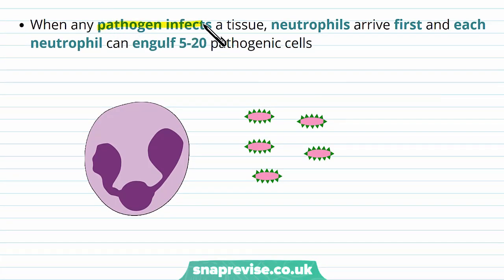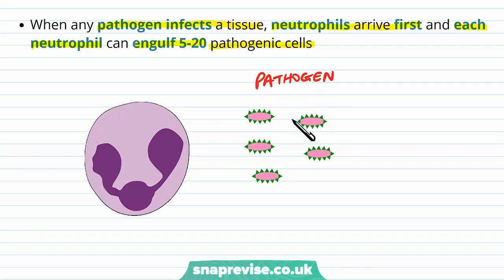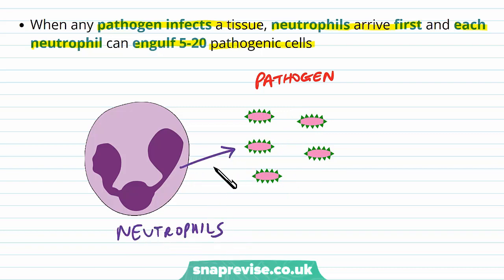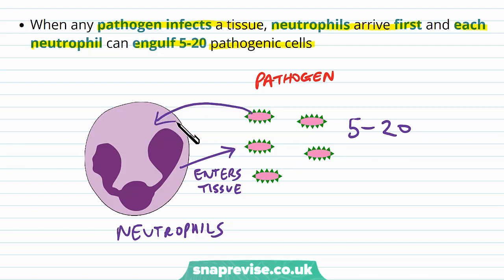If a pathogen has infected a tissue, it needs to be dealt with. The neutrophils arrive first, and each of these neutrophils can engulf about 5 to 20 pathogenic cells. So say we have a bacterial infection — the bacteria have entered a particular tissue and they're dividing. The first thing that happens is neutrophils leave the blood system, enter the tissue, and use phagocytosis to engulf about 5 to 20 of these pathogens, each of which gets engulfed into the neutrophil's body and broken down.